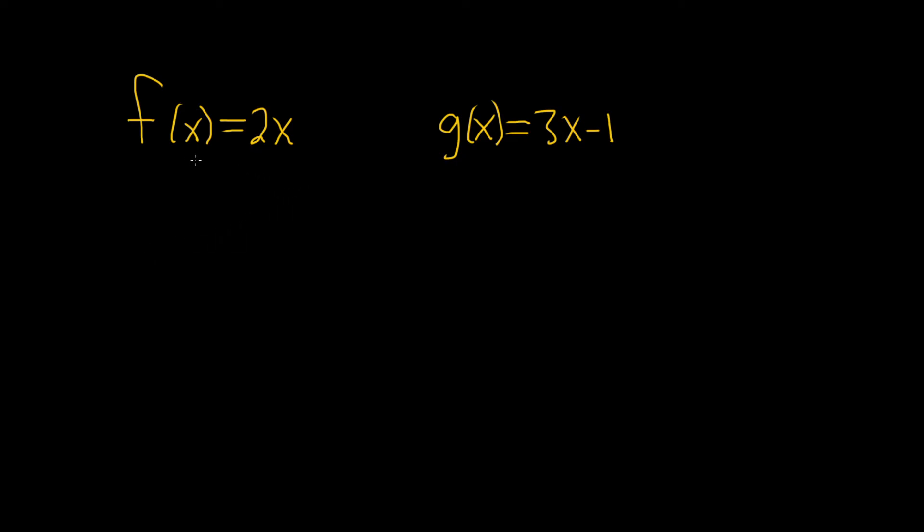In this problem, we have two functions, f of x equals 2x, and g of x equals 3x minus 1. And we're going to compute some function compositions.